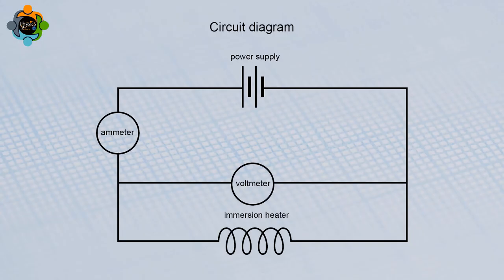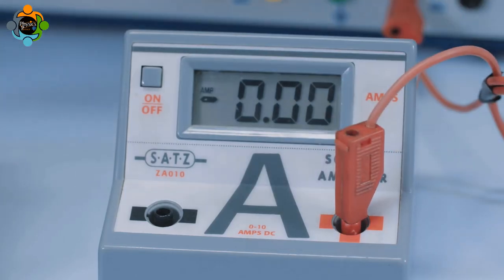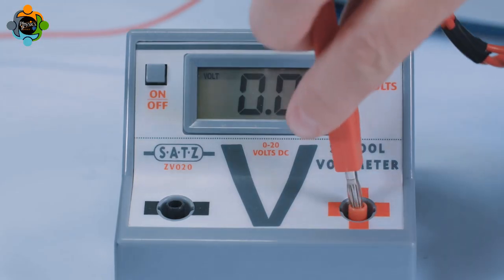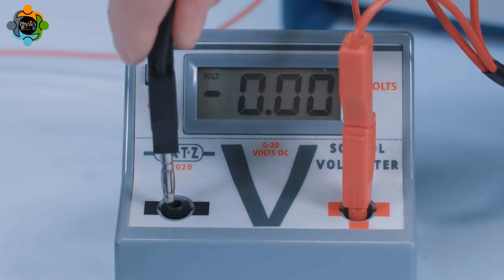An ammeter will measure the current from the power supply, and a voltmeter will measure the potential difference across the immersion heater. These values will allow us to calculate the electrical energy provided by the immersion heater to the ice.